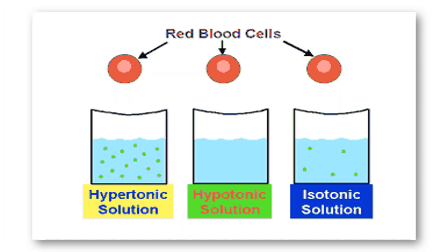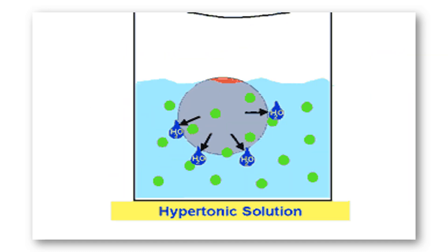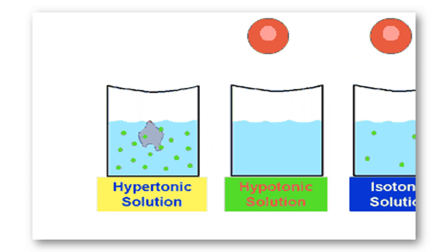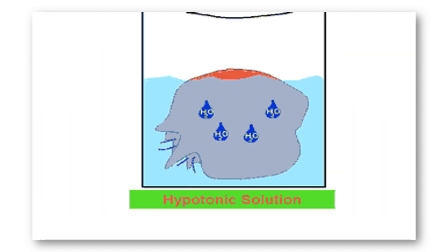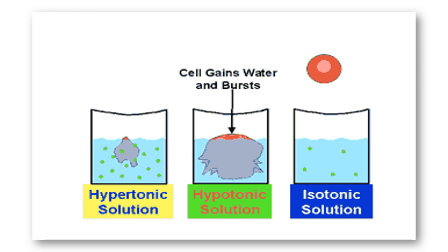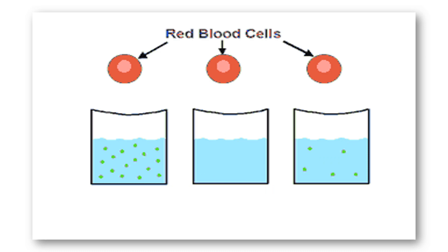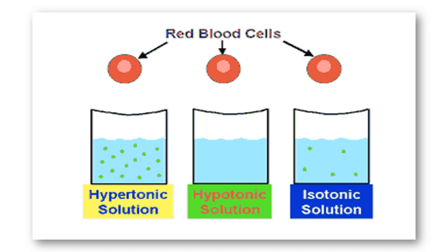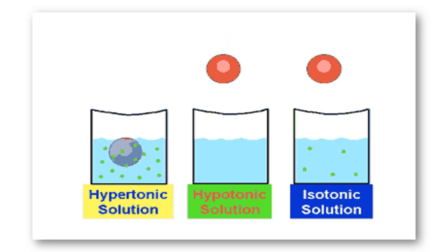When red blood cells are placed in a hypertonic solution — hyper meaning more than — the cell loses water. Outside the cell, the concentration of solute is higher and the concentration of water is lower than inside the cell, so animal cells placed in a hypertonic solution shrink. For example, meats are sometimes preserved by being salted. Bacteria are killed not by the salt itself, but by the lack of water in the meat.